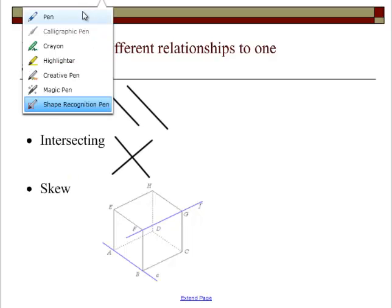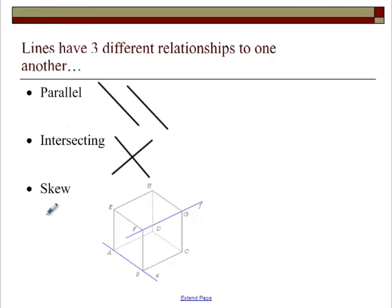The new one that we may not have seen before is skew. Skew lines don't cross, but they're not parallel. You have to look at it in a 3D picture. They don't cross, but they're not going in the same direction because they're on two separate planes. So they're non-coplanar lines.